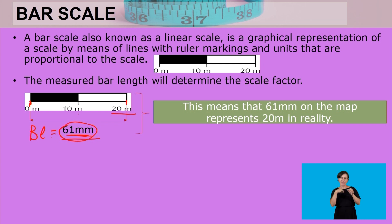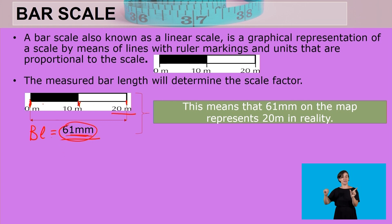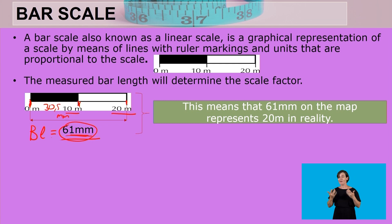If you decide to measure from zero to 10 meters, and that's half the bar, then it's going to be 30.5 millimeters. So 30.5 millimeters will represent 10 meters in reality. It depends on where you end with your measuring — that will give you the scale factor.